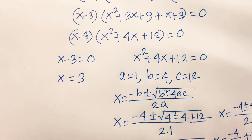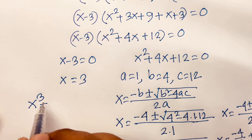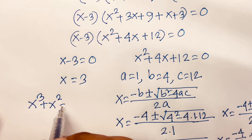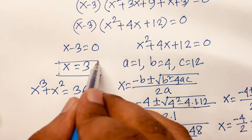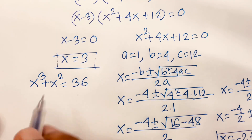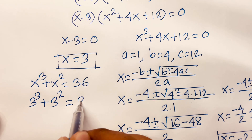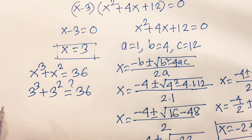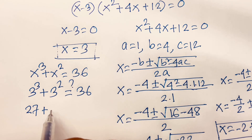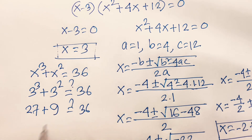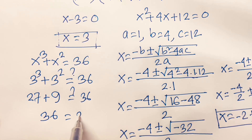Our equation is x³ plus x² equals 36, and x equals 3 is the real solution. Verifying: 3³ plus 3² equals 27 plus 9 equals 36. So 36 equals 36, which confirms x equals 3 is correct.